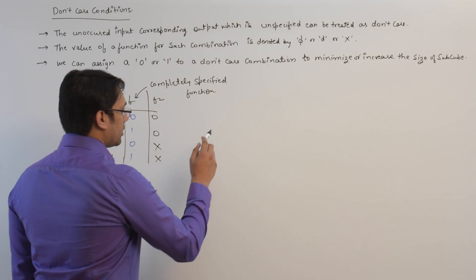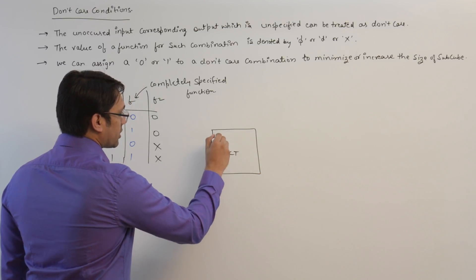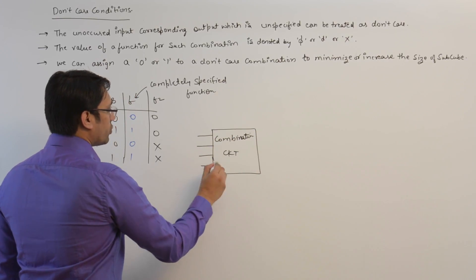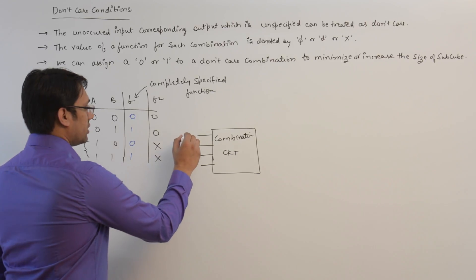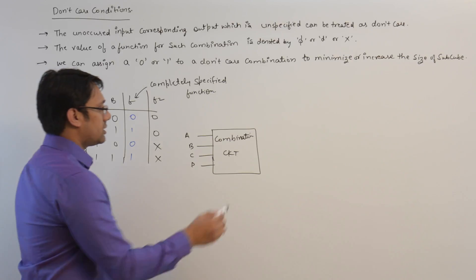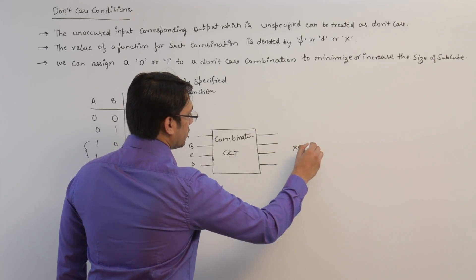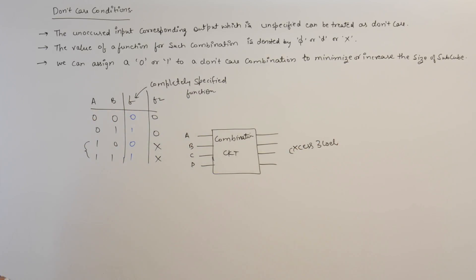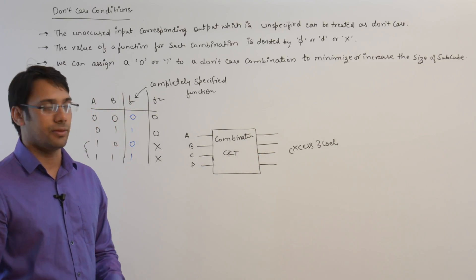For example, let us suppose we want to make a circuit. This is a combinational circuit that is going to take some numbers as input — bits A, B, C — and then give some bits as output, and those output bits are the XS3 code.